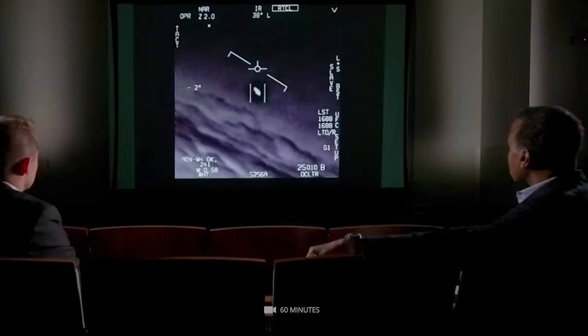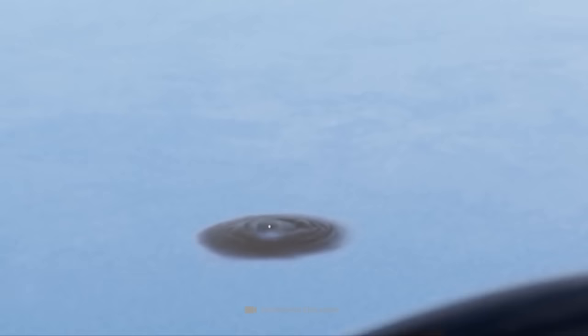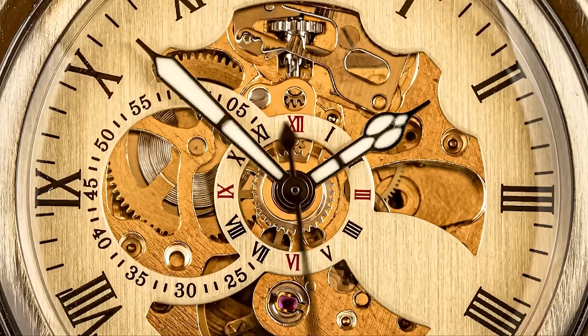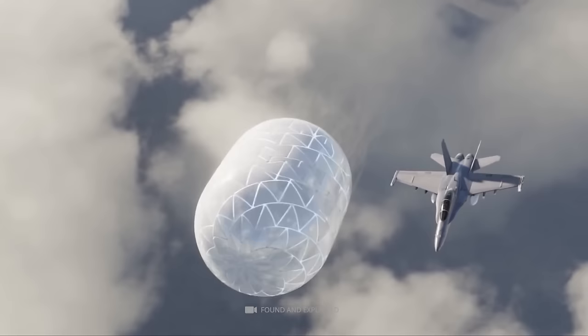According to Fravor, the strike group's USS Princeton ship had been monitoring strange aircraft for two weeks before the incident. The plane would arrive at an altitude of 80,000 feet, then quickly descend toward the water before coming to a stop and hovering around 20,000 feet. Fravor claimed to observe a white oval object floating over an occlusion in the water. He calculated the length of the object to be around 40 feet. There were four people in total—two pilots and two weapons systems officers in the back seats of the two planes—who saw the object.